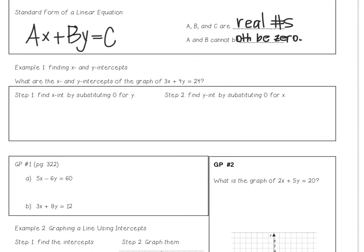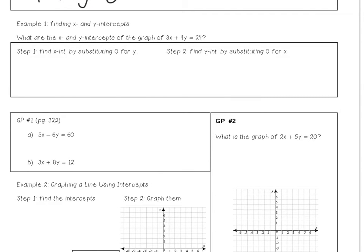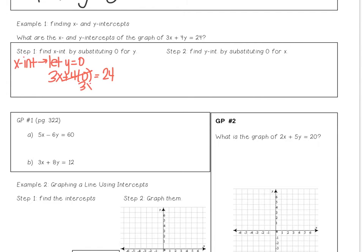Example 1: we're going to find the x and y-intercepts of an equation written in standard form. This equation is written in standard form as Ax plus By equals C. To find the x-intercept, we let y equal zero, because at the x-intercept the y-coordinate is zero. So we get 3x plus 4 times 0 equals 24, which gives us 3x equals 24. Divide both sides by 3 and x must be 8. So the x-intercept is 8.